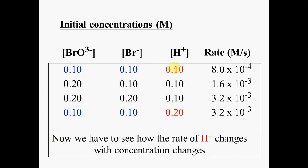Now we look at the hydrogen ions. We find a reaction where the hydrogen ion has changed its concentration while the bromide ion and bromate ion remain constant. Work this out on your own and bring it to class so we can discuss the relationship, and then we'll show how we determine the overall rate law.